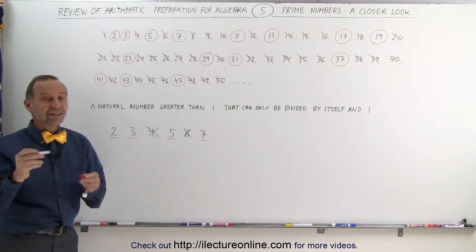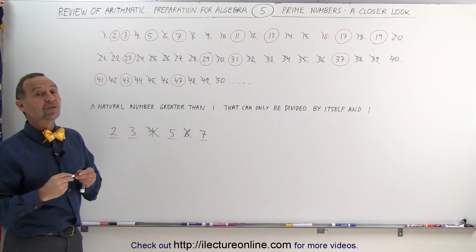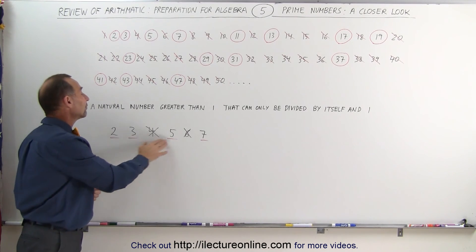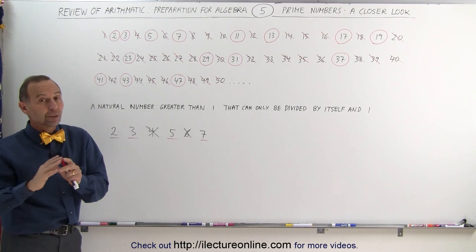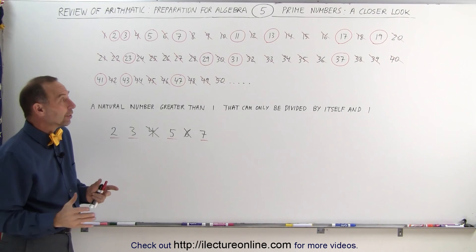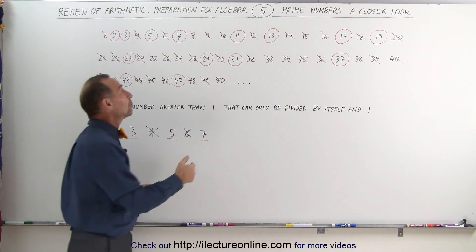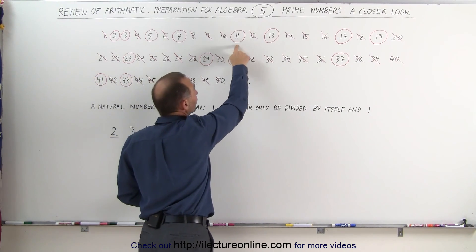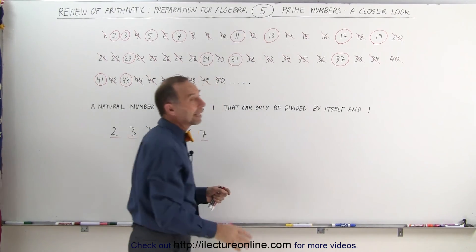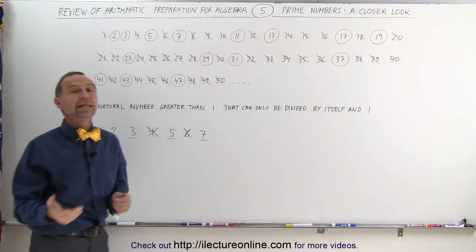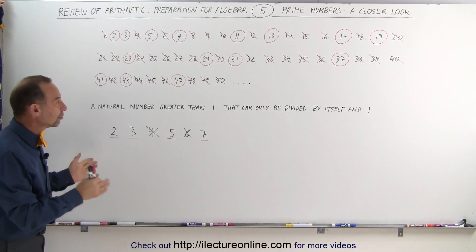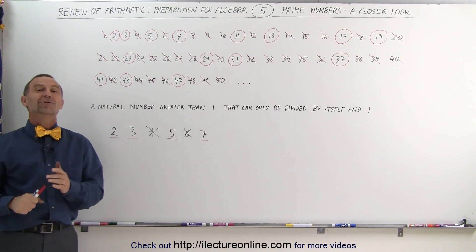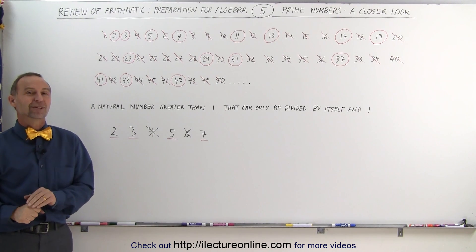And that's the easiest way to figure out if a number is prime or not — go ahead and try to divide it by 2, 3, 5, and 7. Now when the numbers get to be bigger, you then have to take the next few prime numbers into account. For example, can it be divided by 11, can it be divided by 13, and so forth, and then you eliminate those as well. But for the smaller numbers, this is the easiest way to find your prime numbers. That's how it's done.